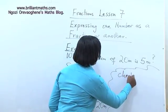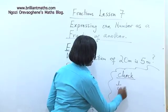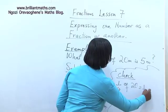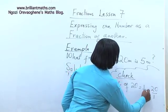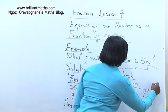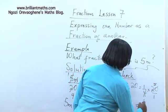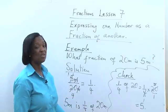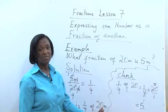Check. 1 quarter of 20 is equal to 1 over 4 times 20 over 1. 4 in 4 is 1 and 4 in 20 is 5. So our answer is correct. So this tells us that 5 meters is 1 quarter of 20 meters.